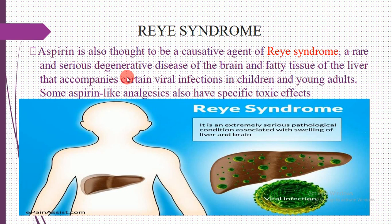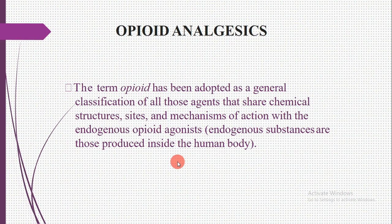Reye's syndrome is actually a condition reported due to use of aspirin. Aspirin is thought to be a causative agent of Reye's syndrome. It is a rare and serious degenerative disease of the brain and fatty tissue of the liver that accompanies certain viral infections in children and young adults. It is an extremely serious pathological condition associated with swelling of the liver and brain.